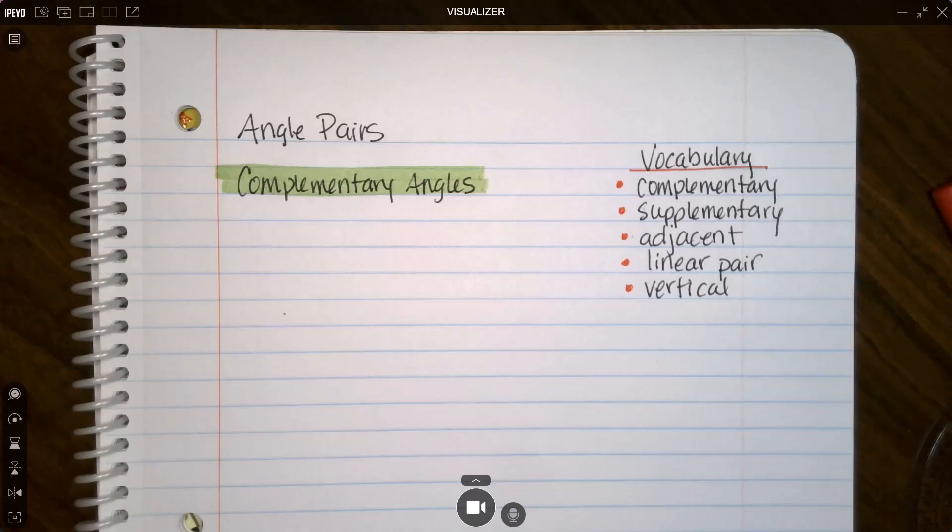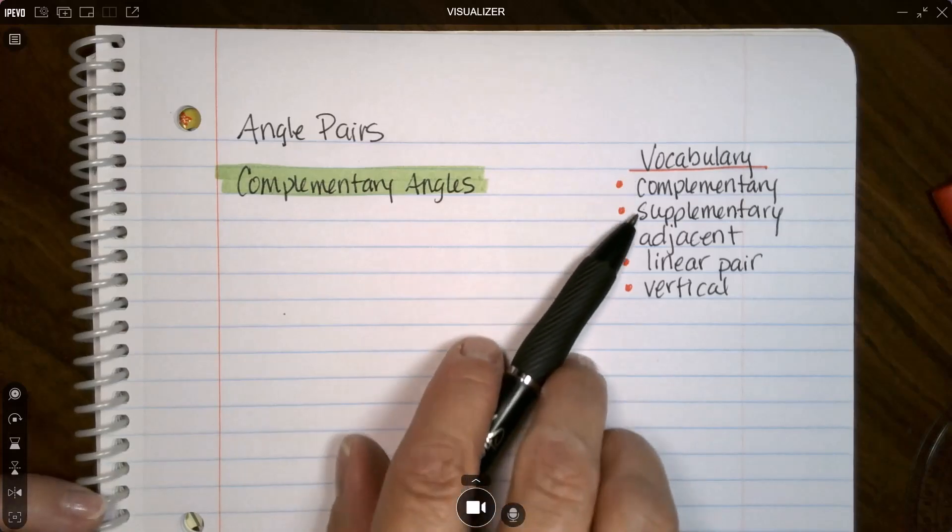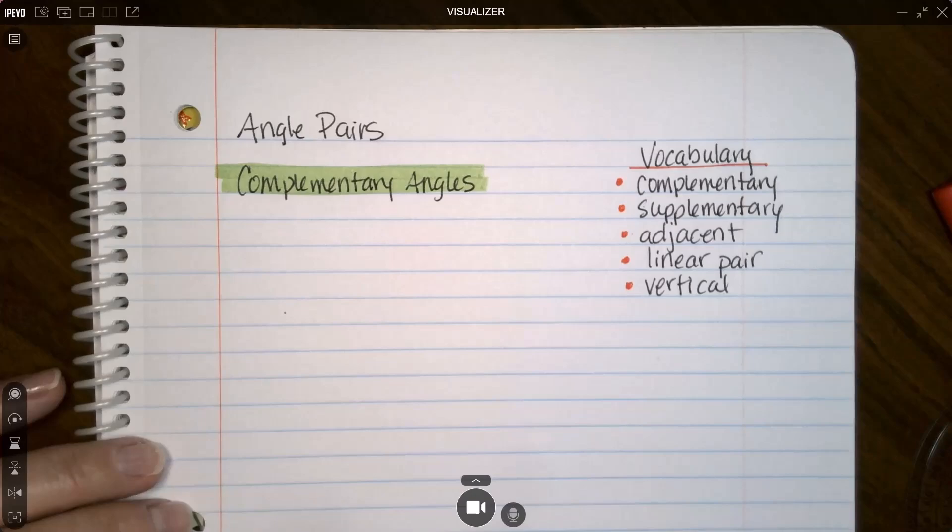Hi, this is Tammy and I do math for coffee and we are continuing with our geometry lessons. Today I'm going to talk about angle pairs. These are the angle pairs we're going to be going over today. I'm going to draw them all out.